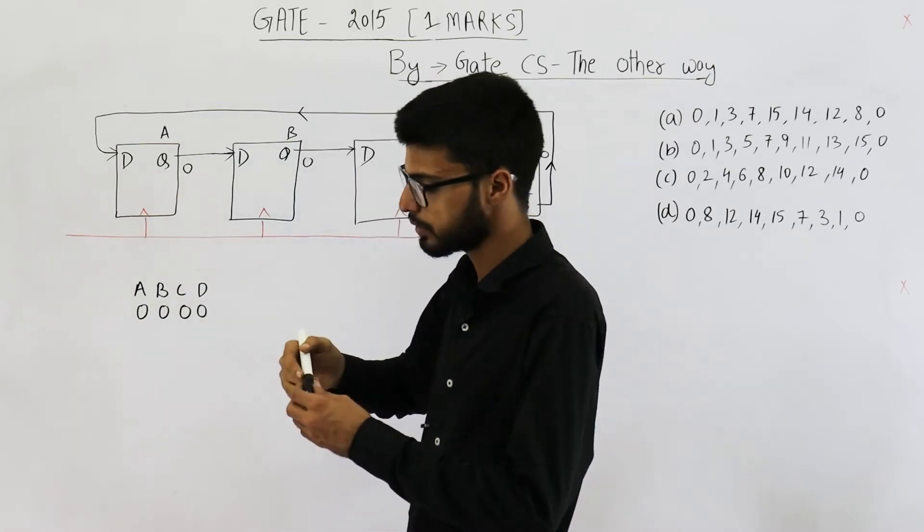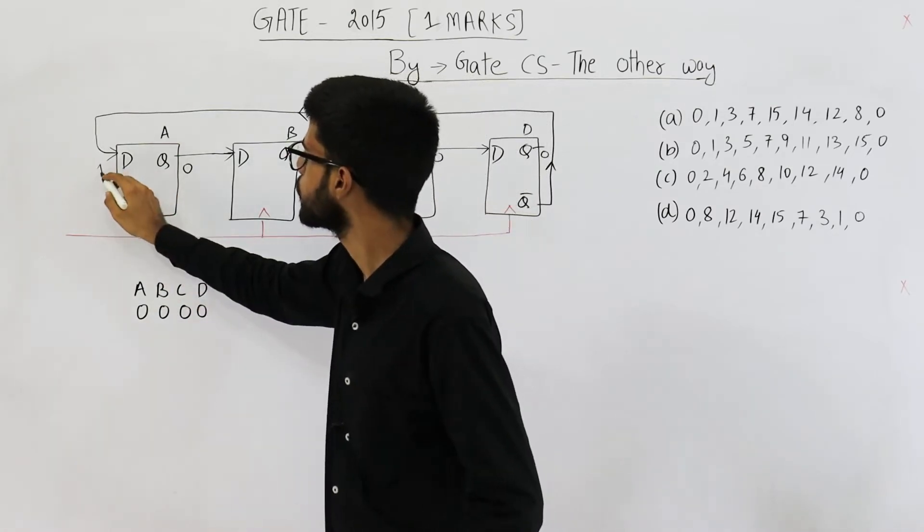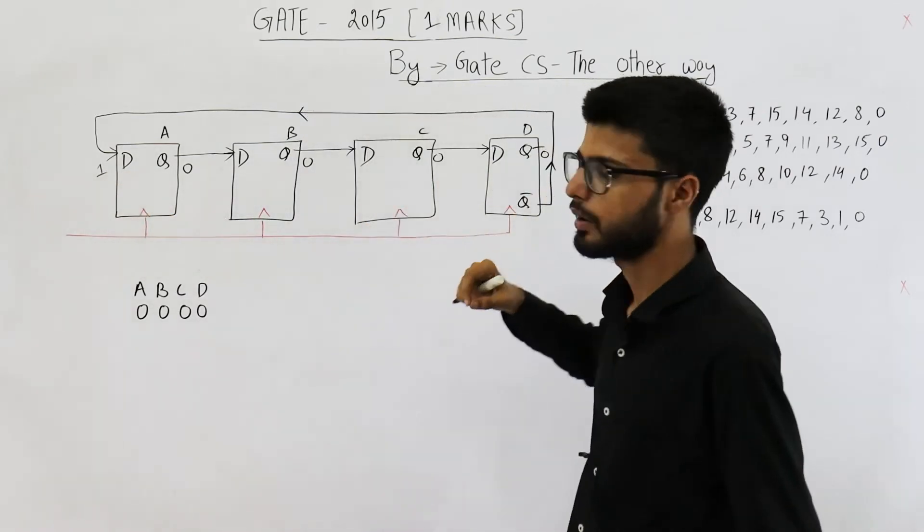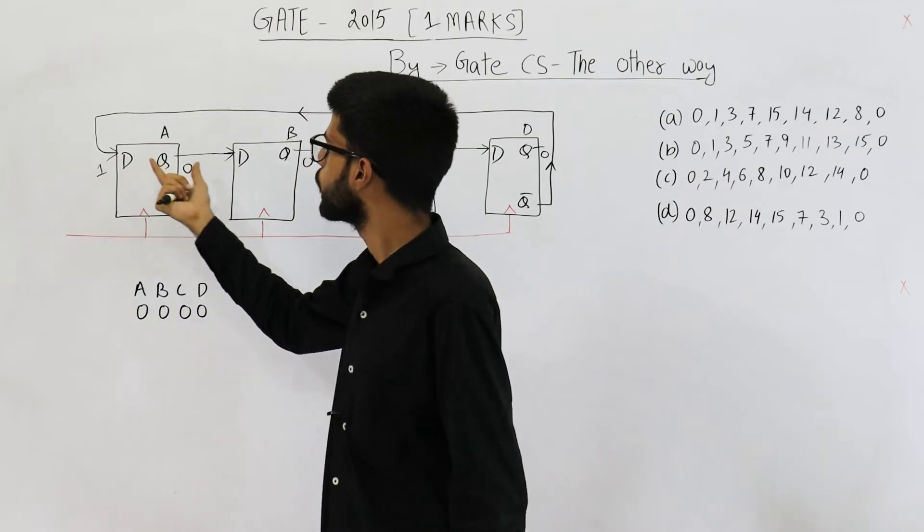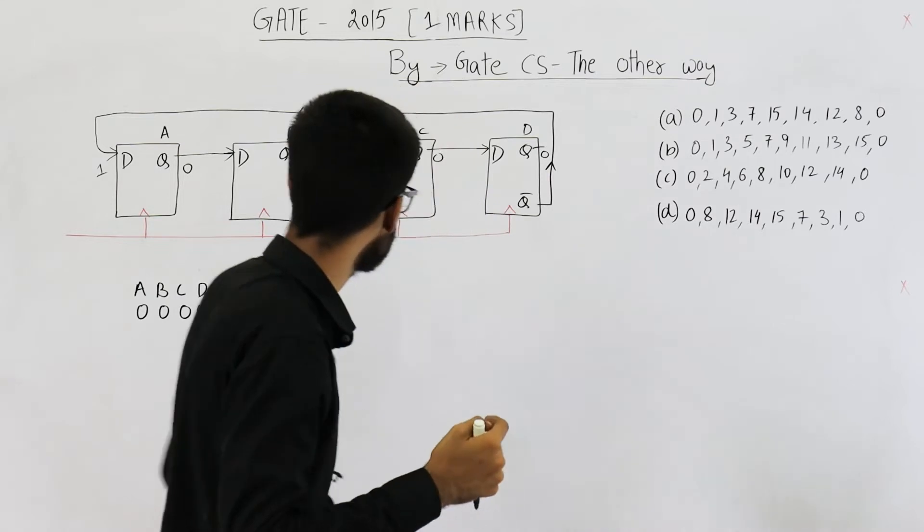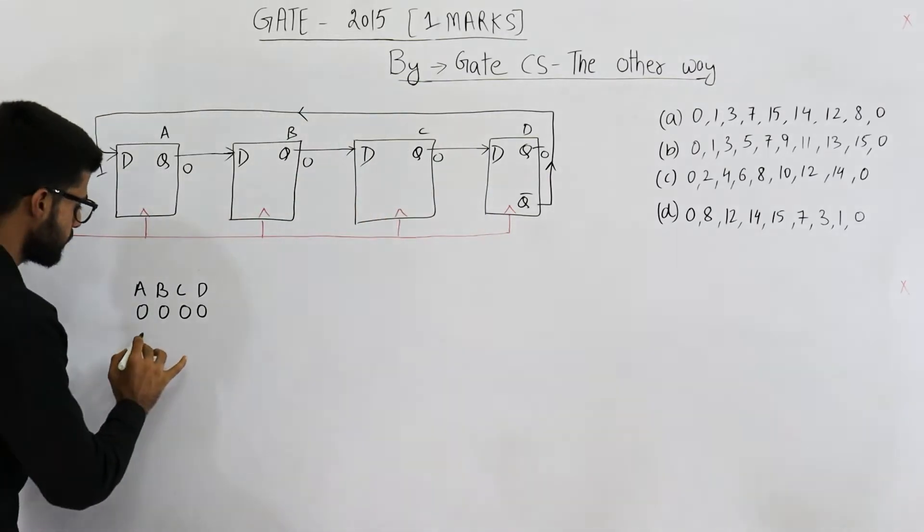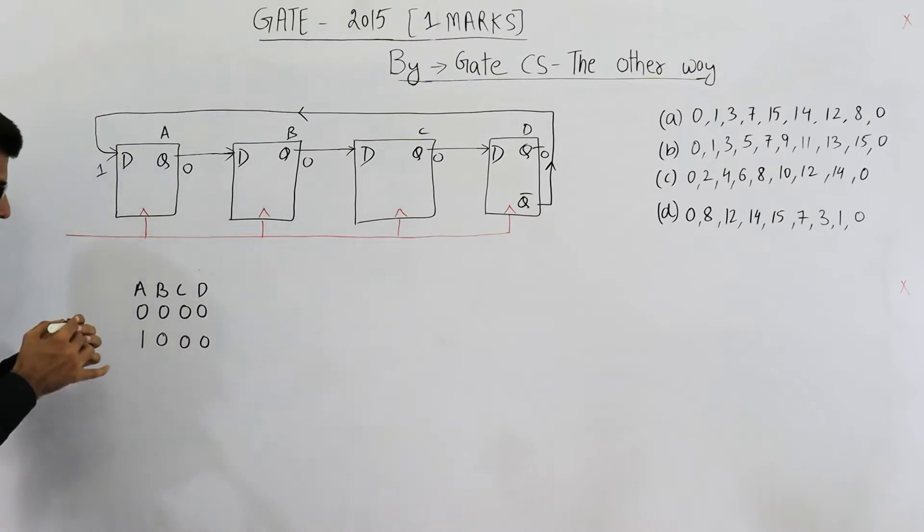And this is 1. Just pay attention. 0 complement is 1. So that 1 will be shifted here, because before clock signal, this D input is 1. This is 1, 0 complement. Whenever we give a clock signal, this D input will be given as the output. So this 1 will become 1. All of the other 3 outputs are 0. That means it is 1, 0, 0, 0.